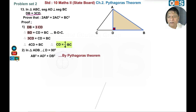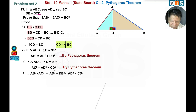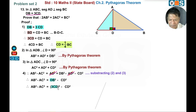In triangle ADC, angle D is 90 degrees. By Pythagoras theorem: AC square equals AD square plus CD square. Subtracting equation 3 from equation 2: AB square minus AC square equals AD square plus DB square minus AD square minus CD square. The AD square terms cancel, leaving AB square minus AC square equals DB square minus CD square. Substituting DB equals 3CD: that is 3CD bracket squared minus CD square, which gives 9CD square minus CD square equals 8CD square.